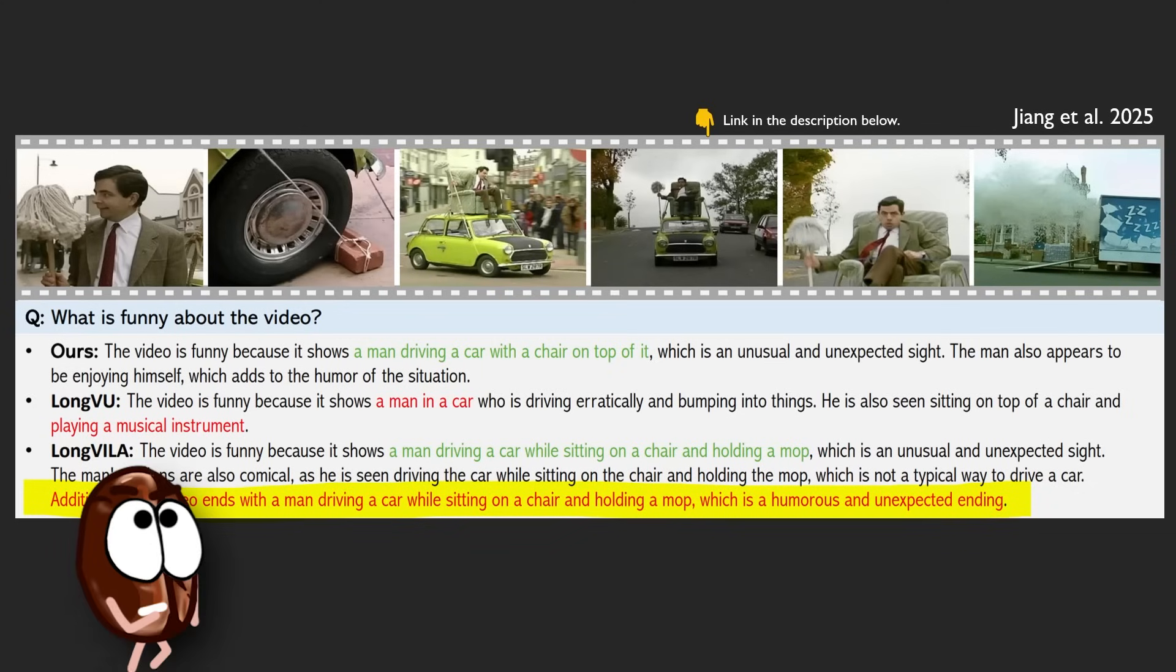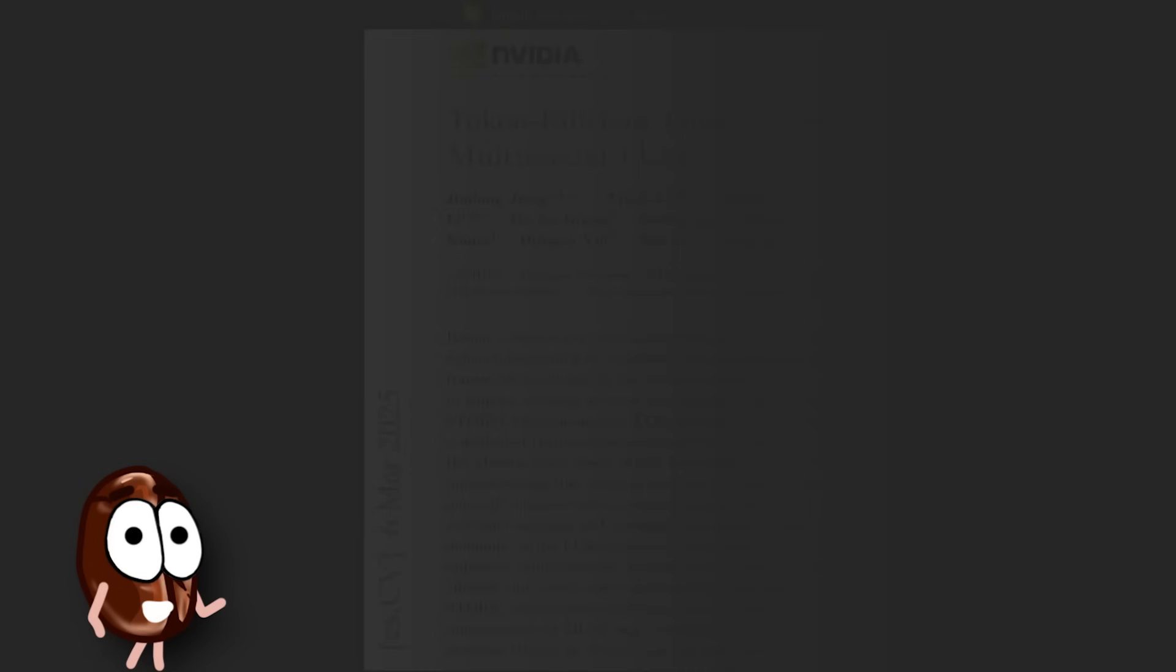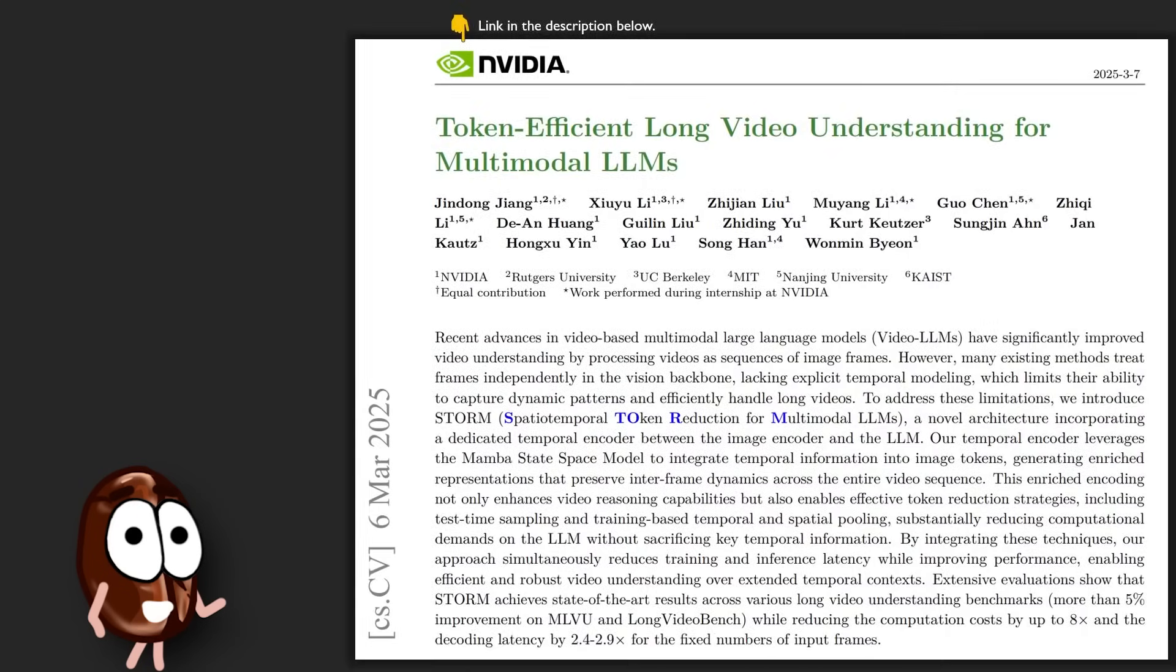But what if we could compress the video without losing the plot? That's exactly what this new paper proposes with a new video LLM called Storm. It slashes the number of video tokens passed to the LLM, but in a way that actually improves reasoning. Instead of drowning in details, Storm distills the sequence and understands it better.